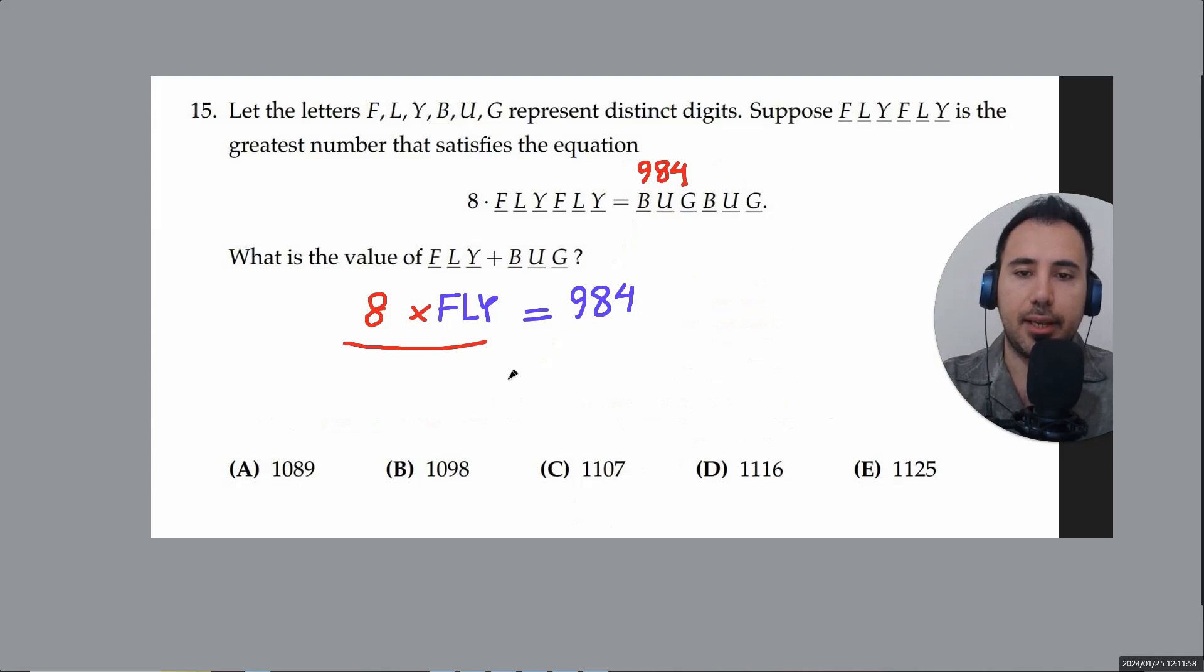So we just need to find a three digit number that when we multiply it by eight it becomes nine eight four. So it's easy. All we have to do is divide nine eight four by eight. So you could do it here. The answer is one two three. So that's going to be the value of FLY. So FLY is one two three.